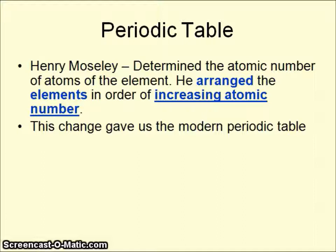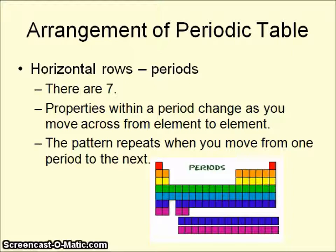This arrangement gave us what we consider the modern periodic table. We now arrange our elements according to atomic number, or the number of protons. That arrangement shows horizontal rows — we call these rows periods, and there are seven of them total. The properties within a period change as you move across from element to element, and then the pattern repeats. For example, there is a pattern between hydrogen and helium, and that pattern repeats with lithium and neon.